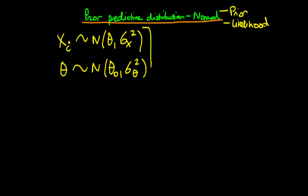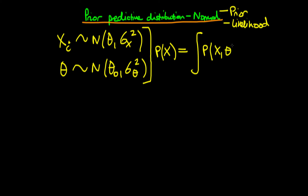When we're looking for the prior predictive distribution, or any predictive distribution, what we're really trying to obtain is a type of marginal distribution. So what we're trying to obtain is just the probability of x — the probability distribution we would assign to all the different values of x before we've actually witnessed our most recent experiment. Because it's a marginal distribution, we know that we can obtain it just by integrating out all theta dependence of the joint density of x and theta.